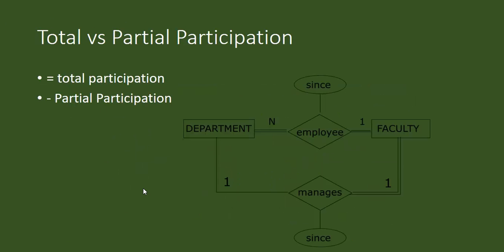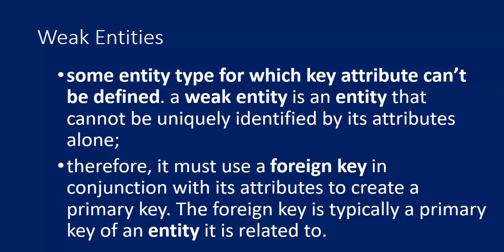A weak entity is an entity type for which a key attribute cannot be defined. A weak entity cannot be uniquely identified by its own attributes alone; therefore it must use a foreign key in conjunction with its attributes to create a primary key. That foreign key is typically the primary key of the entity it is related to.